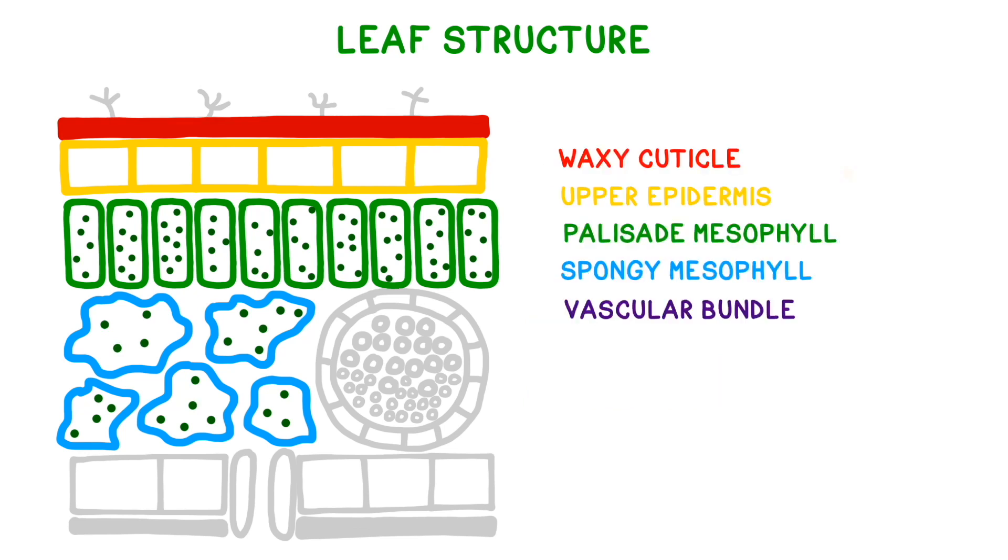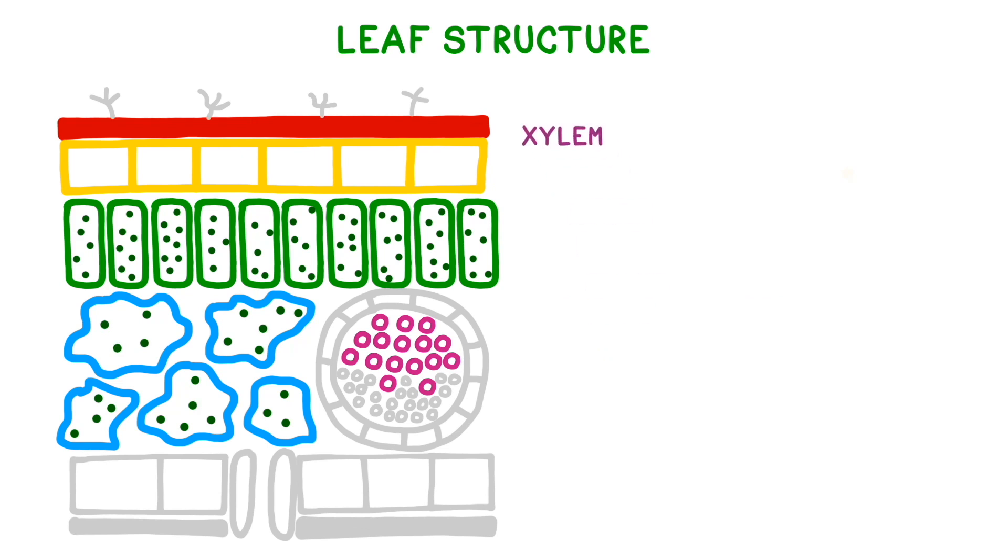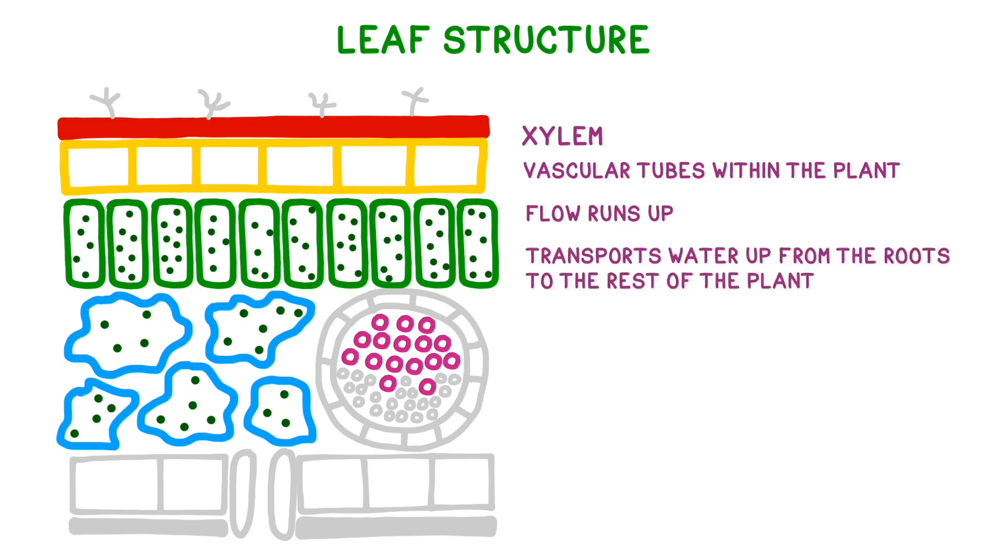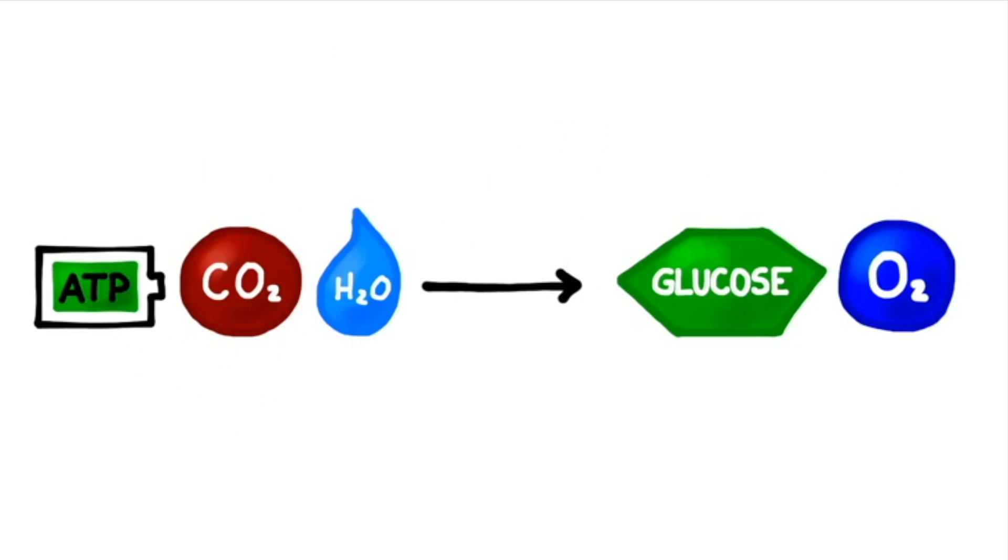The next structure, called the vascular bundle, consists of several different types of tissues. The first tissue is known as xylem. Xylem is a vascular tubule within the plant, and its flow runs upwards. It's used to transport water from the roots to the rest of the plant where it's needed. Remember that water is a necessary reagent of photosynthesis.